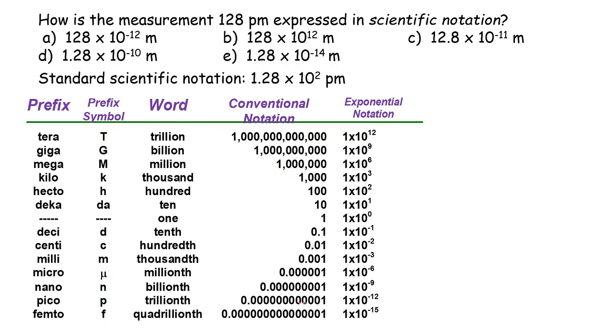Now, 1 picometer is equivalent to 10⁻¹² meters. Let's write that down: 1 picometer equals 10⁻¹² meters. Or we can say 1 meter equals 10¹² picometers. They are the same relationship, only different ways to express it.